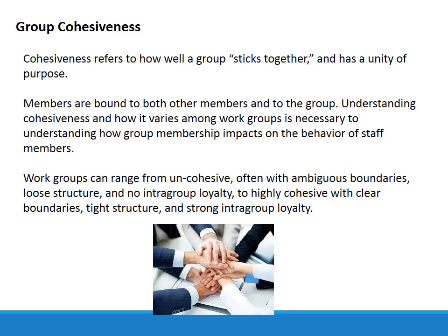Group cohesiveness refers to how well a group sticks together and has a unity of purpose. Members are bound to both other members and to the group. Understanding cohesiveness and how it varies among work groups is necessary to understanding how group membership impacts on the behavior of staff members. Work groups can range from uncohesive — with ambiguous boundaries, loose structure, and no intra-group loyalty — to highly cohesive, with clear boundaries, tight structure, and strong intra-group loyalty. As the manager, you have a lot to do with creating that cohesiveness.